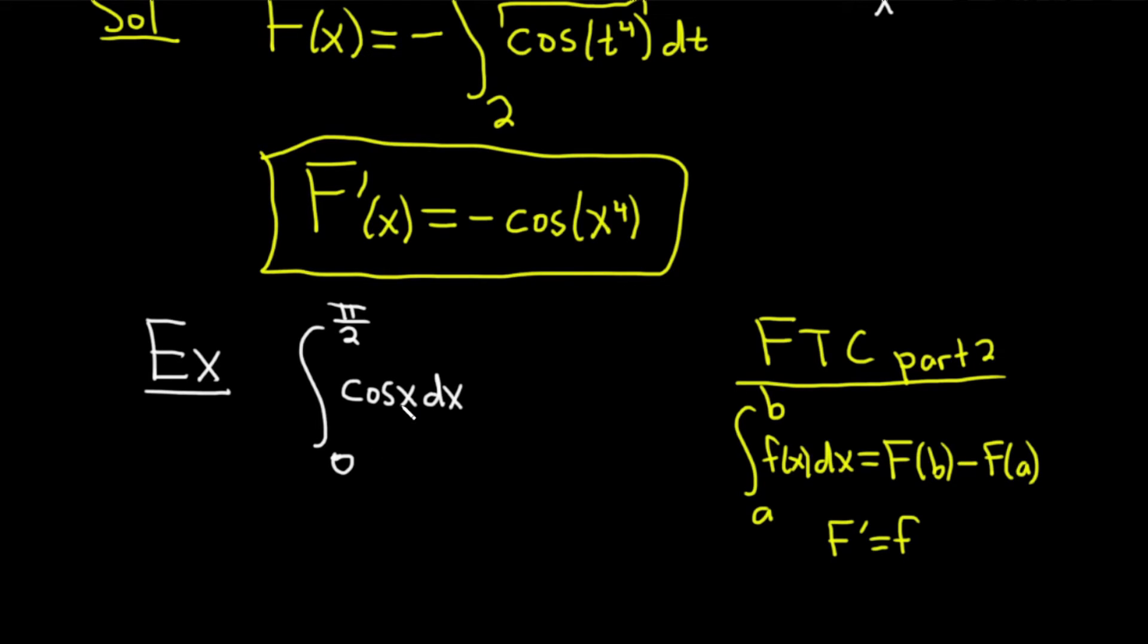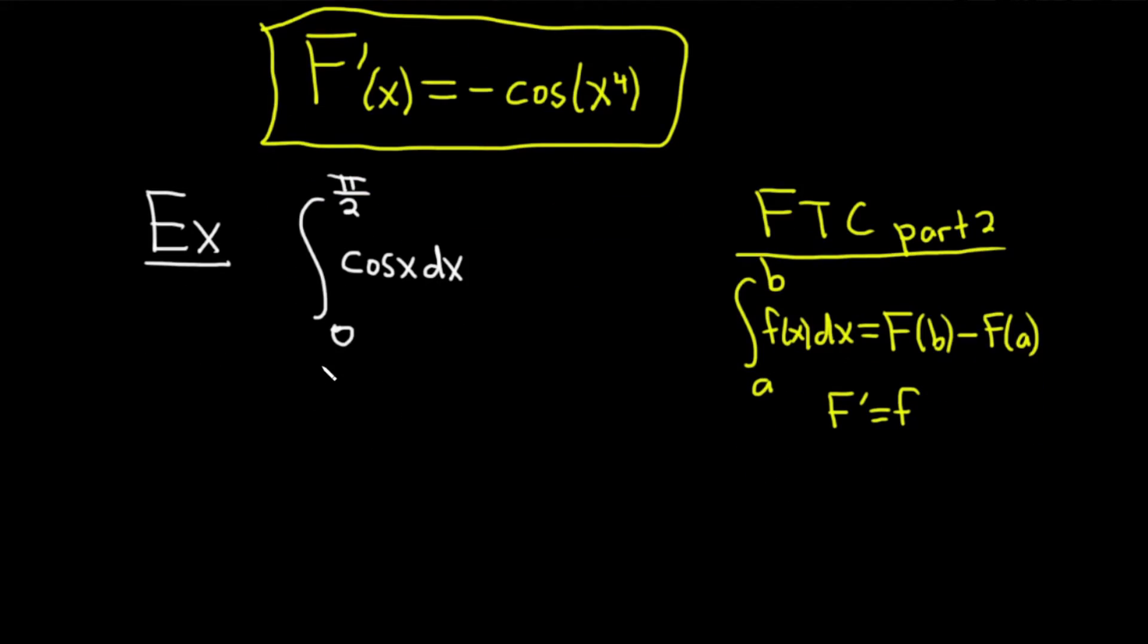So let's go ahead and integrate this problem. I'm going to show you how to do it and then explain why we're actually using FTC part 2. So when we're integrating this, we first look at the cosine and ask yourself, what's a function whose derivative is going to give you cosine? Well, the derivative of sine is cosine. Therefore, the integral of cosine is sine.